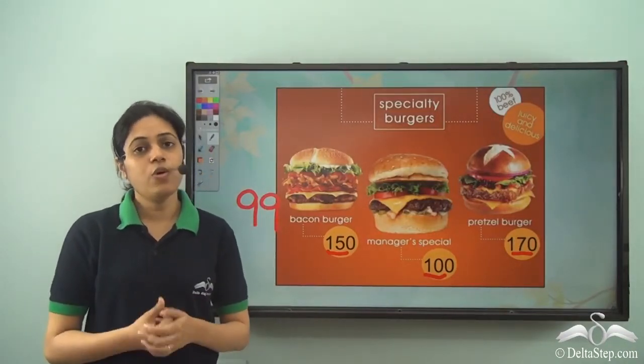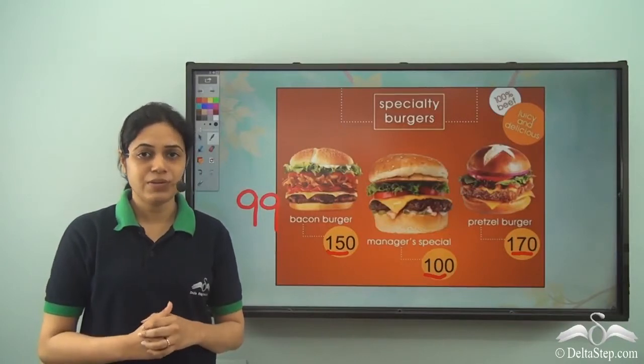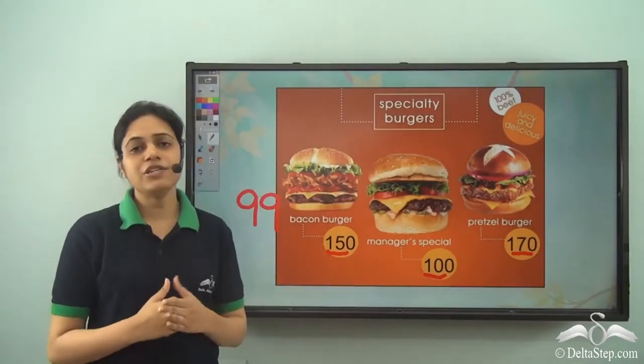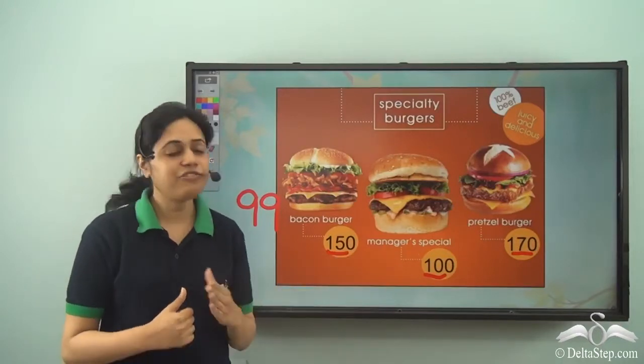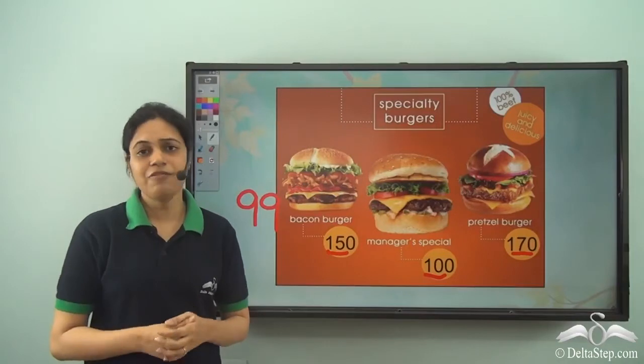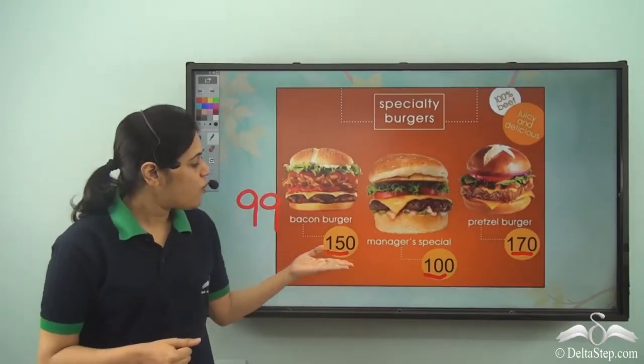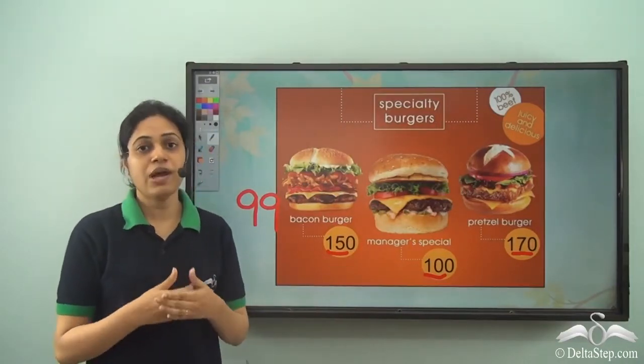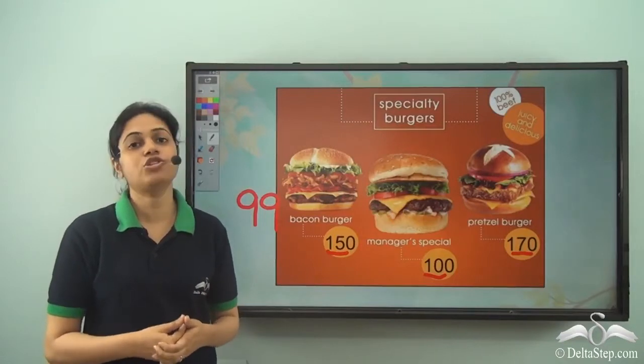So he was very surprised because he knew numbers only till 99. So he knew only two-digit numbers. Now what are these three-digit numbers? These numbers have three digits in them. So he started thinking and became very curious that what are these numbers actually? Do numbers after 99 also exist?